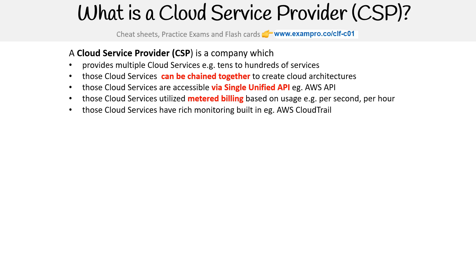Those cloud services have rich monitoring built in — every API action is tracked and you have access to that. In AWS's case, this is CloudTrail. Those cloud services also have an infrastructure as a service offering, meaning they have networking, compute, storage, databases, things like that.